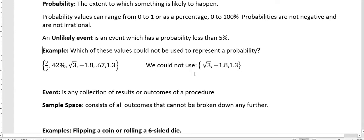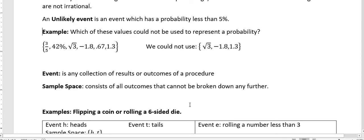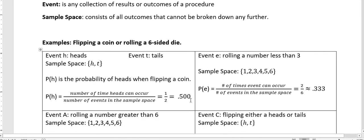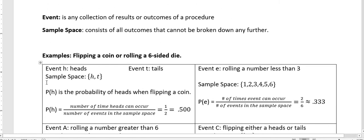So an example of something where we might want to know the probability is flipping a coin or rolling a six-sided die. So when we're looking at the event, this first one is flipping a coin, and so my events are H, which is that I get a heads, or T, which I get a tails.